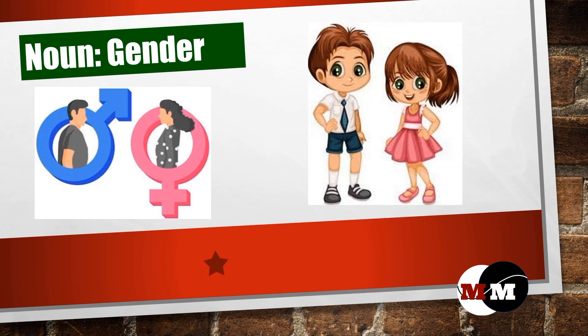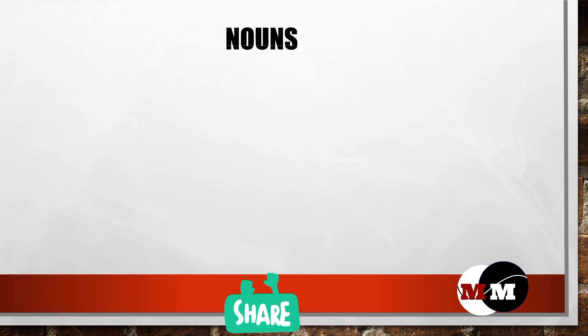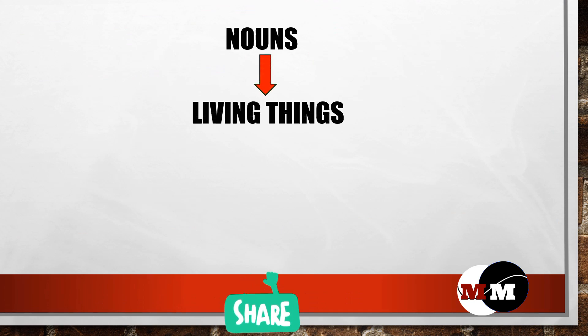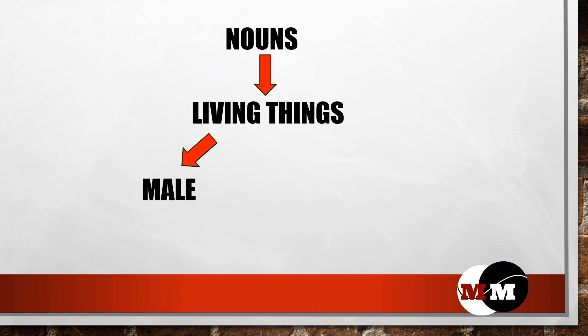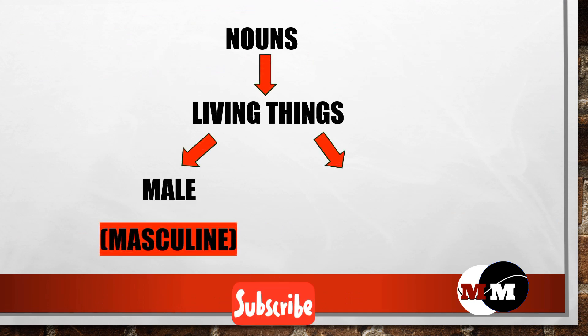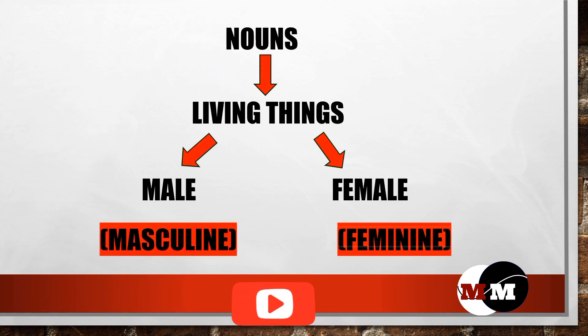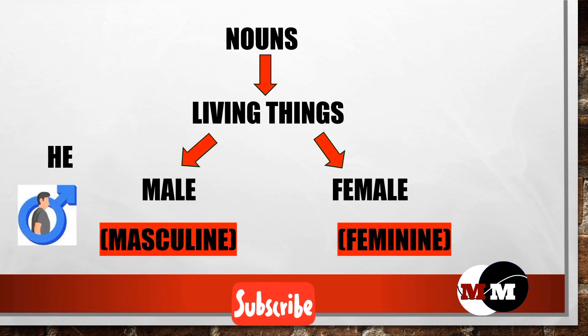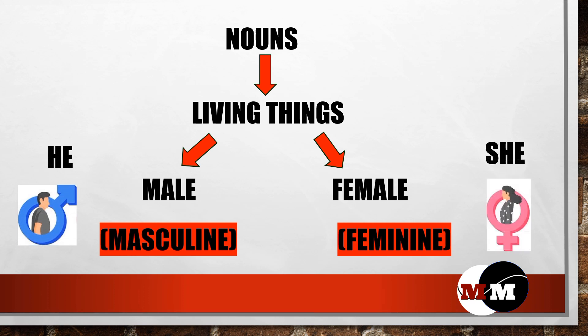Hello my little friends. Today we will learn about gender. Every noun that refers to living things is either male or female. Masculine means he gender. Feminine means she gender.